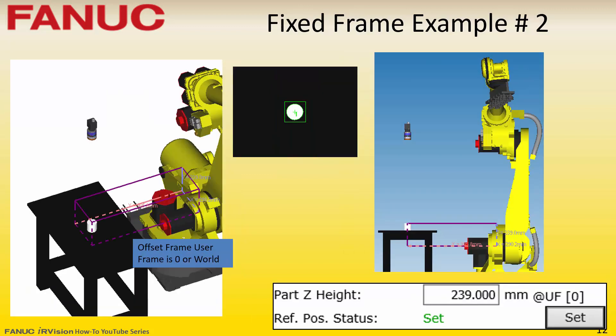In this second fixed frame offset example, the offset frame user frame is zero or world. The world frame origin for any FANUC robot is at the center of J1 and at the height of J2, and the positive Z axis will point towards J3. This means for this example, the part Z height would be positive 239 millimeters.